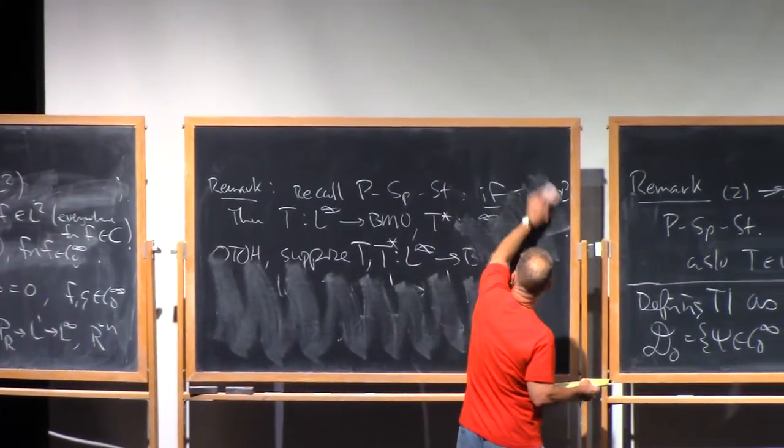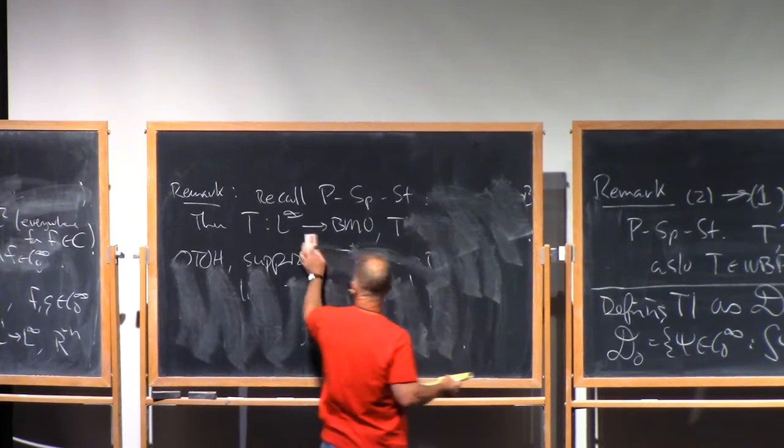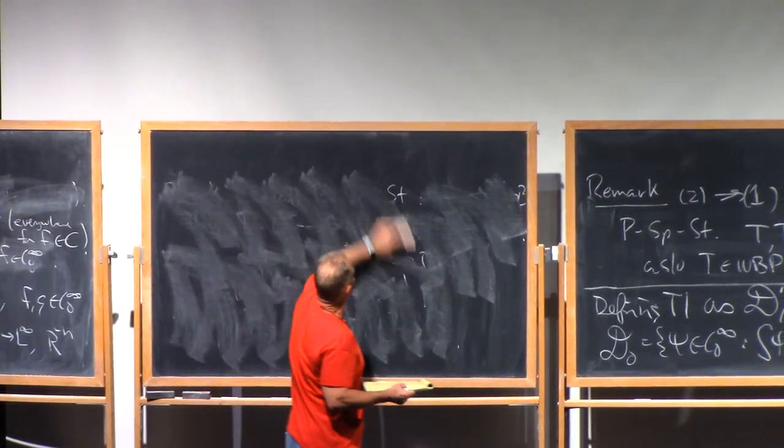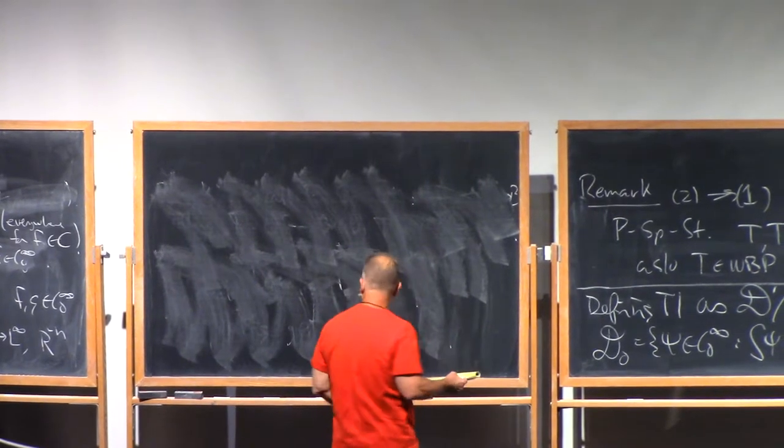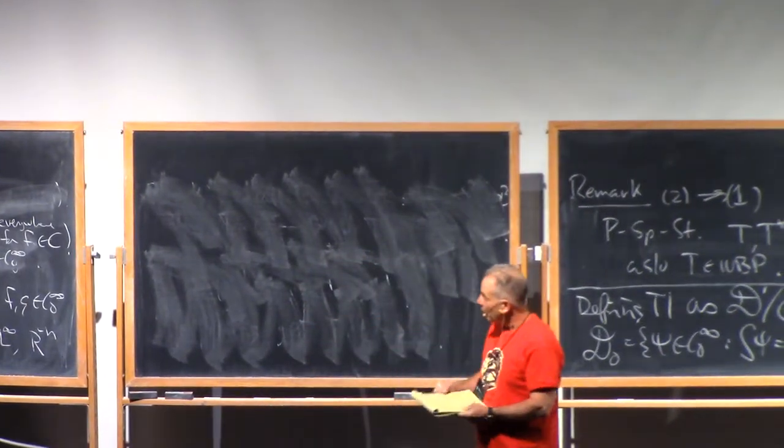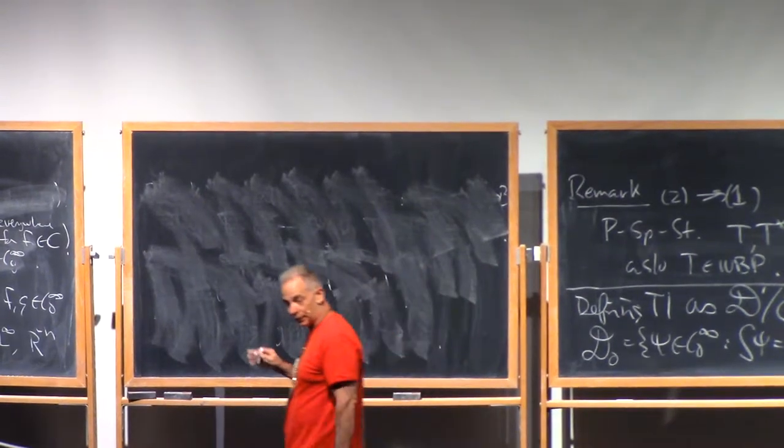And the fact that PR, this operator PR, is mapping L1 to L infinity with norm R to the minus N. You combine that fact with the weak-bounded property and you get it. Again, the details, well, maybe I didn't put the details in the notes, but it's not hard. I guess it's an informal exercise. It's not on the official exercise list.